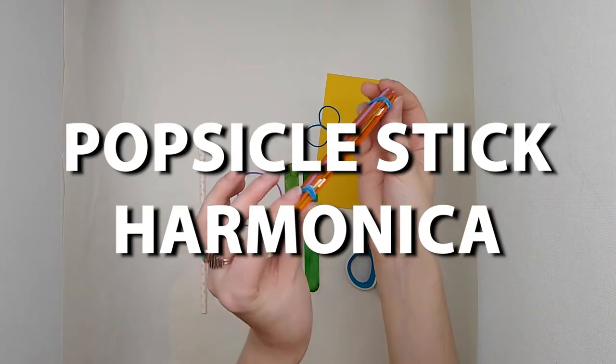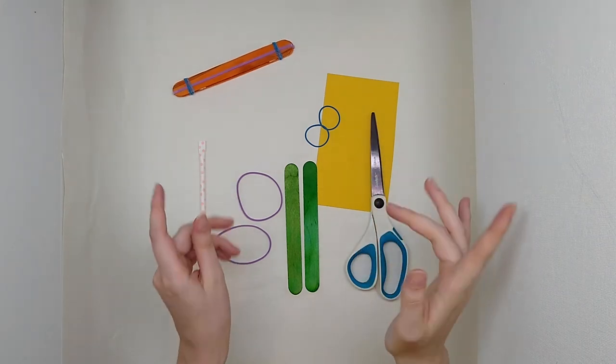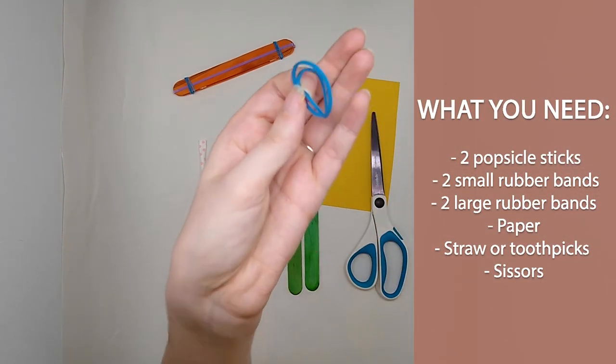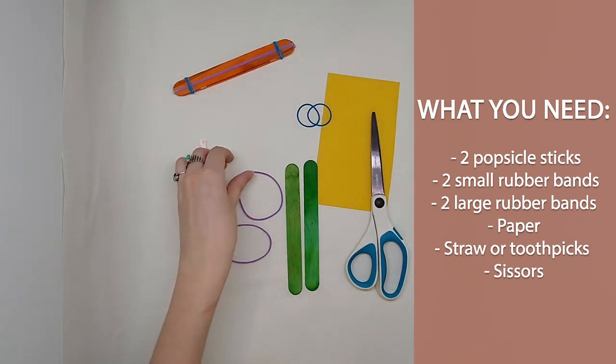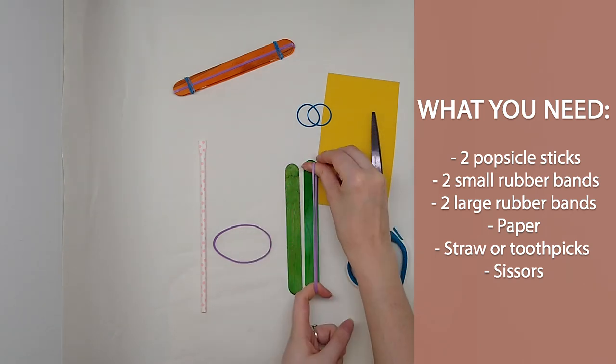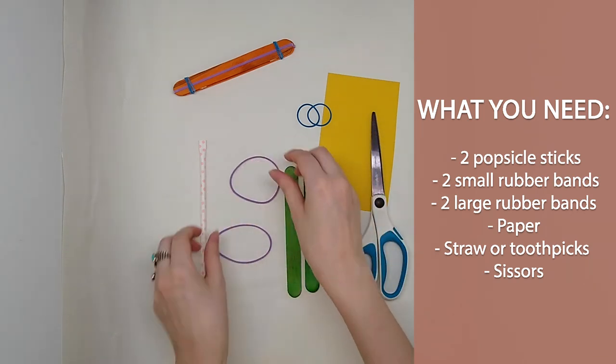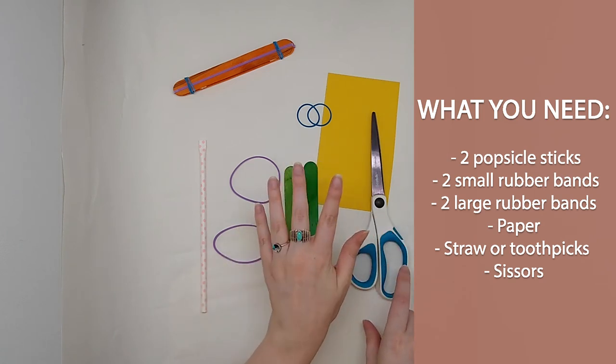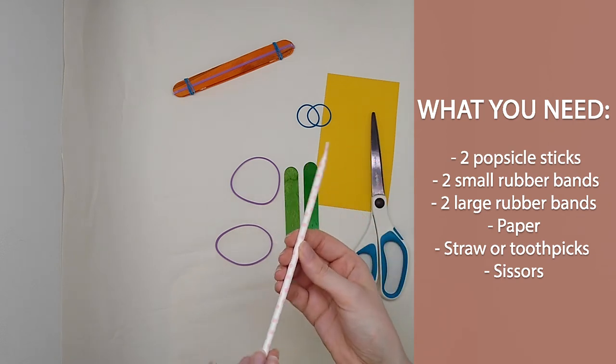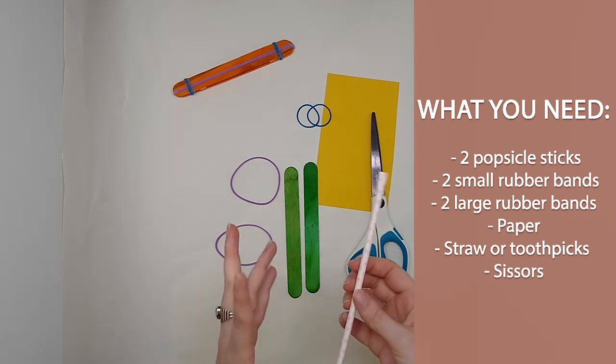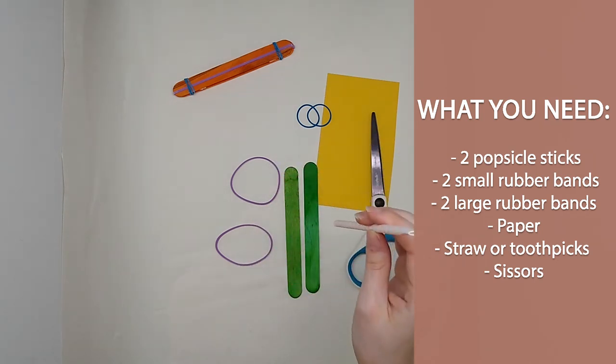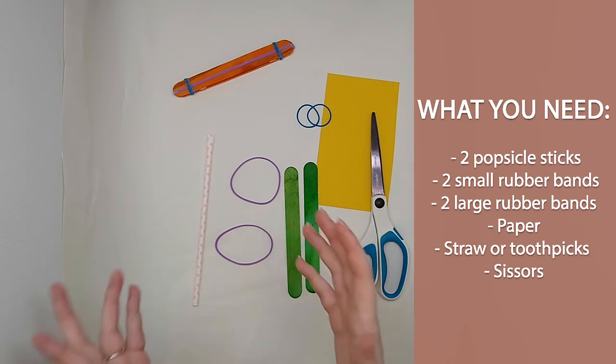To make our popsicle stick harmonica, all you're going to need is two popsicle sticks, two smaller rubber bands, two rubber bands that are wider and a little bit longer - long enough to go around your popsicle stick. You need a piece of paper - construction paper, printer paper, anything will work. I have a paper straw here, you could also use toothpicks or a piece of bunched up paper, whatever works. And that's it, that's all you need to make a really fun instrument.